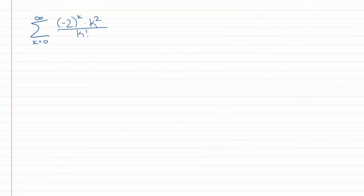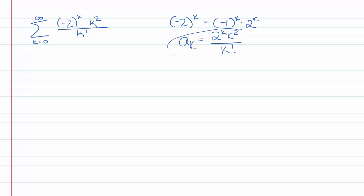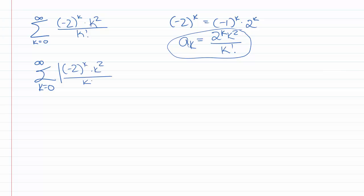Let's look at the sum k goes from 0 to infinity of negative 2 to the k times k squared over k factorial. We can rewrite negative 2 to the k as negative 1 to the k times 2 to the k, so this is an alternating series with a sub k being 2 to the k times k squared over k factorial. I'm not really sure if it's non-increasing, and I don't want to try taking a derivative of a factorial. So before we try the alternating series test, let's see if it converges absolutely. Consider the sum k goes from 0 to infinity of the absolute value, which is the sum of 2 to the k times k squared over k factorial. That factorial is a big hint to try the ratio test.